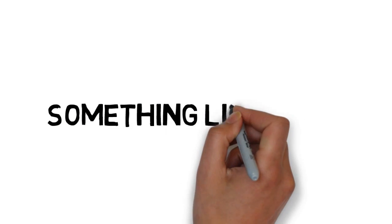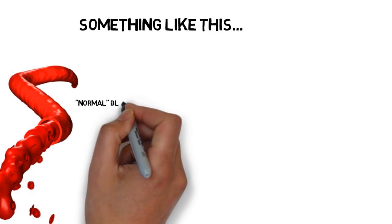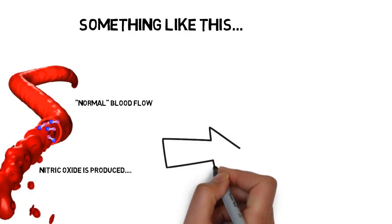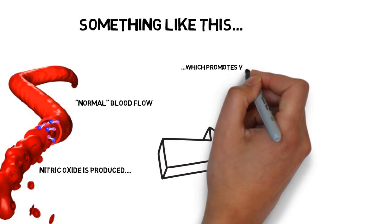It looks something like this. This represents normal blood flow. When nitric oxide is produced, it promotes vasodilation. That supports peak circulation.